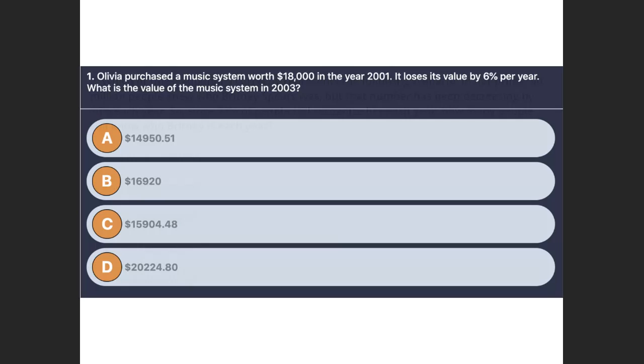This one, I guess we have to solve. It says, Olivia purchased a music system worth $18,000 in the year 2001. It loses its value by 6% per year. What is the value of the music system in 2003? So I'm going to let you guys work on this one. Which answer up there doesn't make any sense at all? That we can cross off. Yeah, D doesn't make any sense. The music system is losing value. And this one, it gained value. So I'm going to cross that one off right away because that doesn't make any sense. Give it a shot. See what you get. And then we'll go through setting it up and solving.